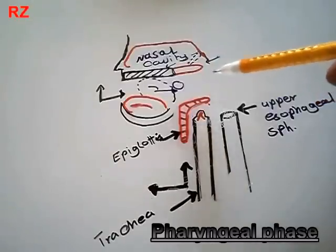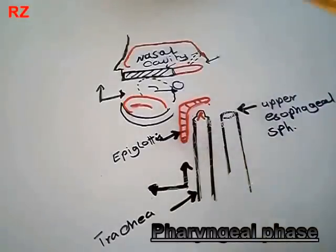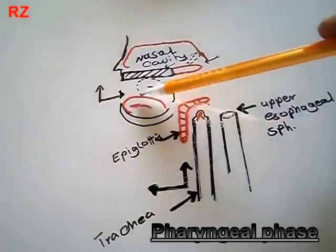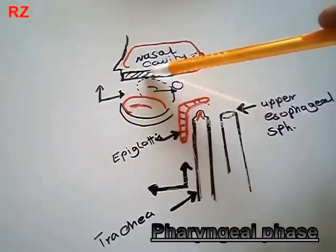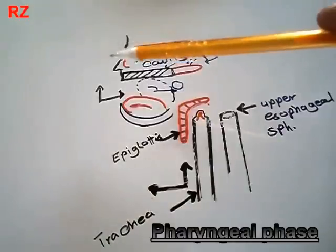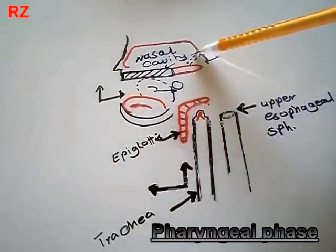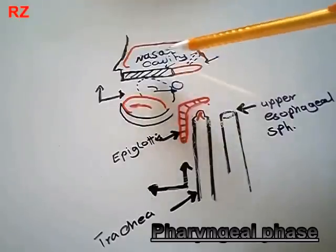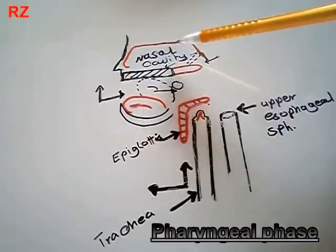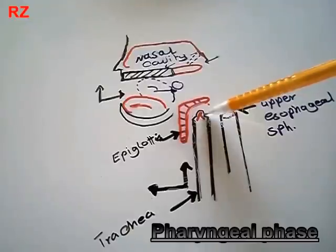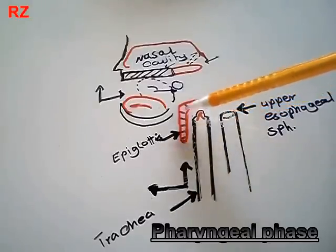When the food bolus enters the pharynx, the pharyngeal phase begins, and a lot of actions take place. First, the tongue is already tilted upward touching the hard palate, so the food bolus cannot exit through the oral cavity. The soft palate is elevated, touching the posterior naris, closing the nasal cavity so the food bolus cannot enter it. The vocal cords are approximated, and the larynx moves upward to be covered by the epiglottis.